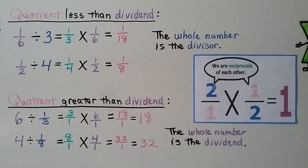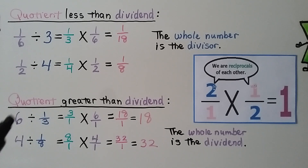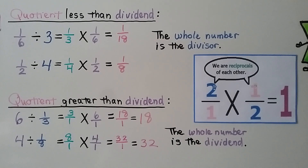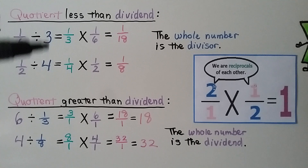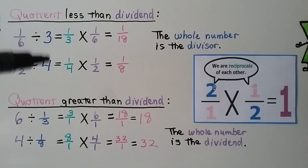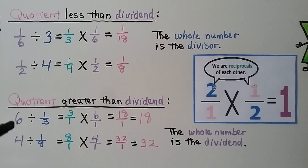The quotient is greater than the dividend when we have a whole number dividend. Do you see the difference? When the quotient is less than the dividend, we have a whole number divisor. When the quotient is greater than the dividend, we have a whole number dividend.